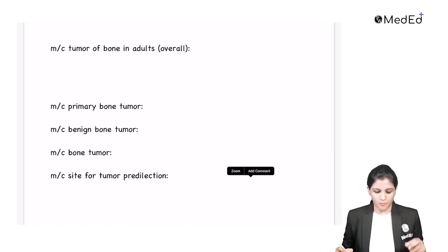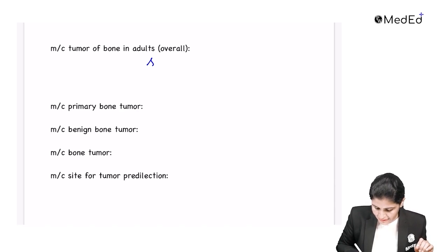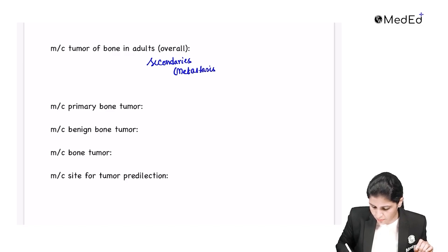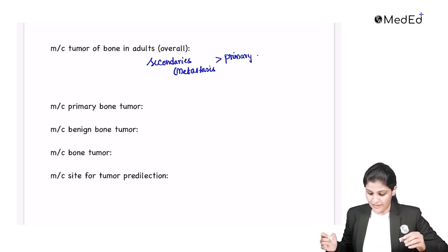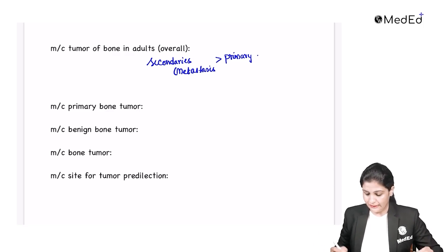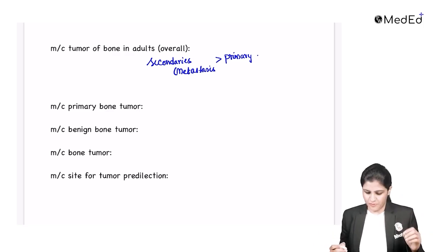What is the most common tumor of the bone? Overall, the answer would be secondaries — that is, metastasis — which are very common compared to primary bone tumors. This is the first thing you have to understand in the context of bone tumors.